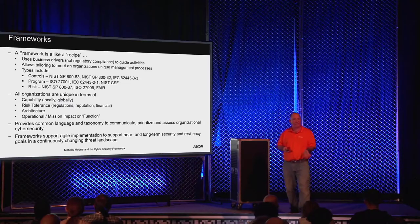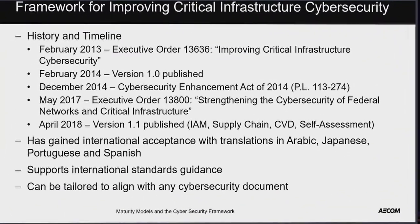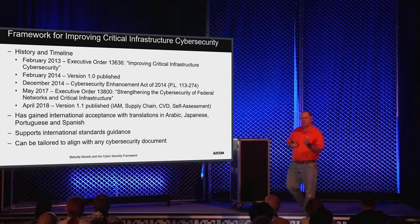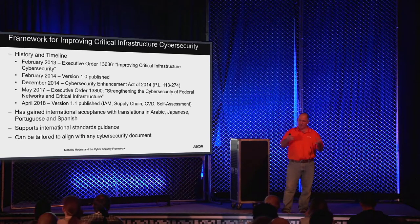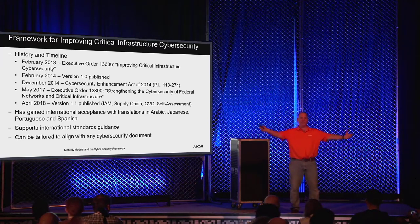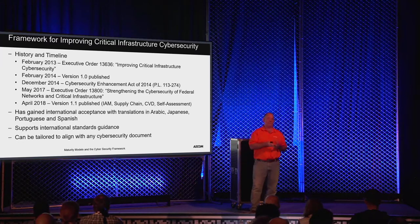2013 was when this really got kicked off with Executive Order 13636. Revision one was published about a year later with lots of community input, and an updated version was released in April 2018. The most impressive addition in version 1.1 was the specific addressing of supply chain and the incredible amount of risk it's starting to bring in. If you look at campaigns like the Target breach, that was a supply chain issue — it was through trusted business partners that the architecture was breached. They also put a lot of emphasis on how we can do self-assessments, which is really the key.